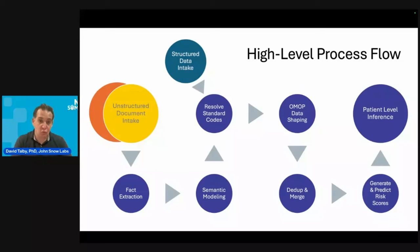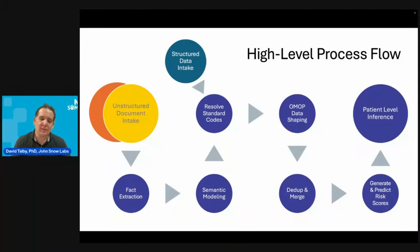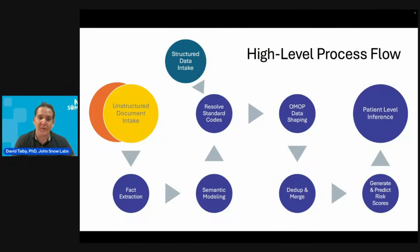Then we do the data modeling. Here you can put data on a knowledge graph or relational database — we chose a relational database because in real production settings we found it scales better and is much easier for ops people to operate. Then we deduplicate and merge — if you take all the source data, you're going to have a lot of duplicated data, a lot of conflicting data, and different levels of certainty.